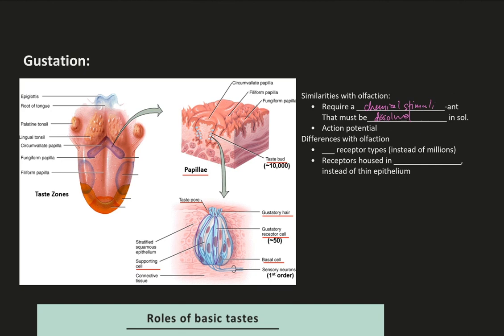Also similar, the odorant and tastant must diffuse in a solution before reaching the receptor. So for olfaction, that would be the mucus in your nose, and for gustation, that would be your saliva. That's why it's difficult to taste and sometimes smell with a dry mouth.